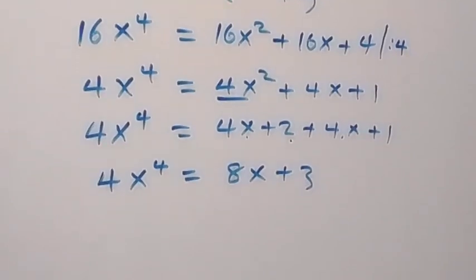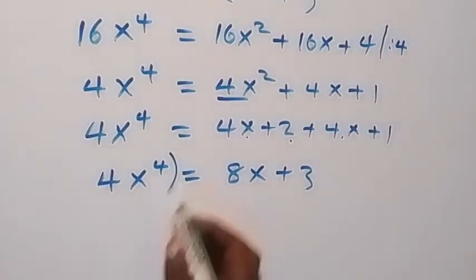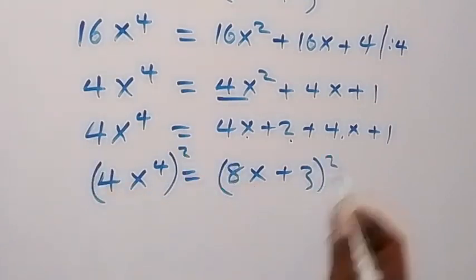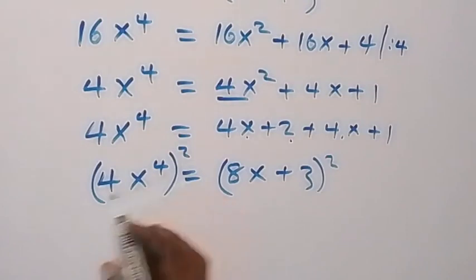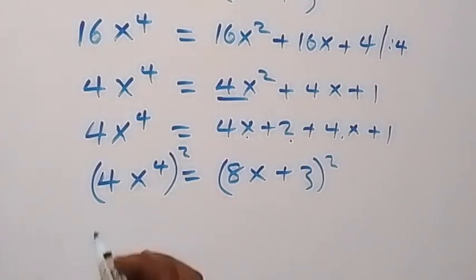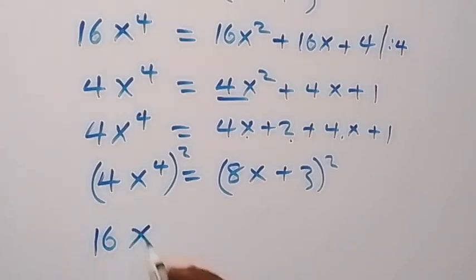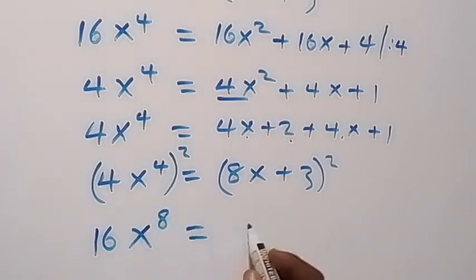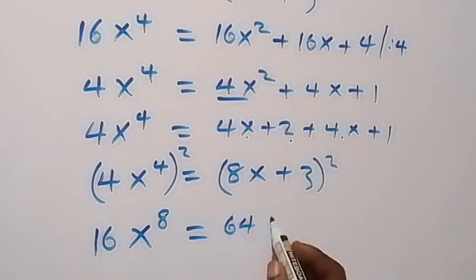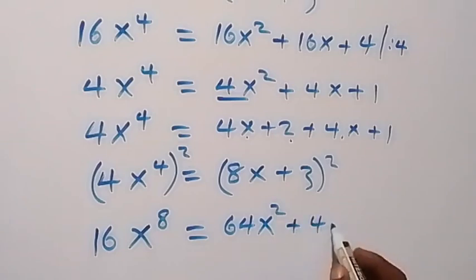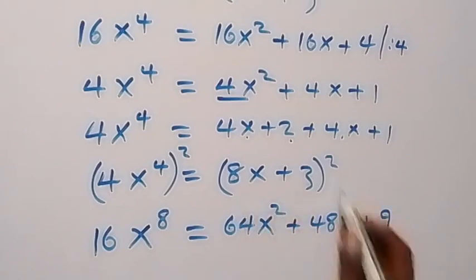Next, we square both sides again. The left side gives 4 squared, that's 16, and x raised to power 4 squared, that's x raised to power 8. The right side gives (8x plus 3) squared, which expands to 64x squared plus 48x plus 9.